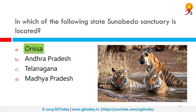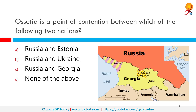In which of the following states is the Sunabeda Sanctuary located? The correct answer is Orissa. Sunabeda Wildlife Sanctuary is a proposed tiger reserve located in the Nuapara district of Orissa, adjoining Chhattisgarh. It has a total area of 500 sq km. The sanctuary harbors a great diversity of wildlife habitats with a vast plateau, canyons and 11 waterfalls.